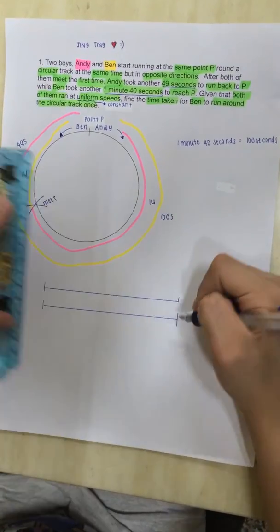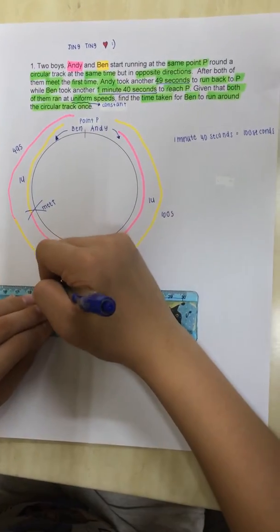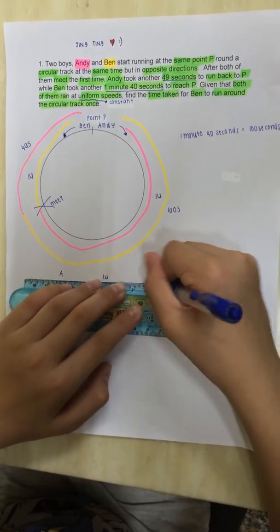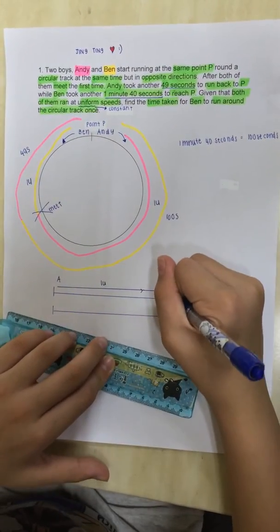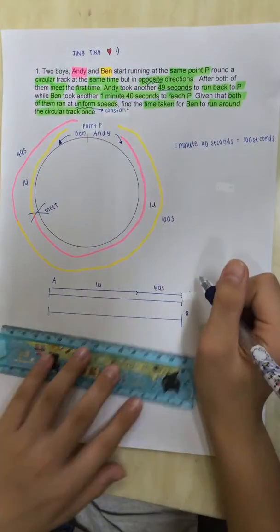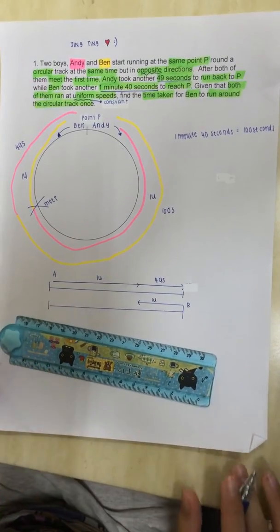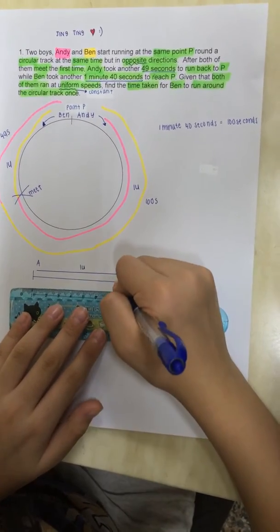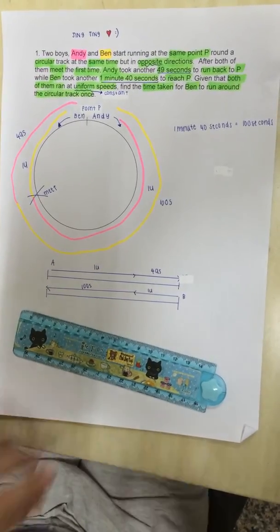So, the first one I will be doing is Andy. So, Andy ran 1 unit before meeting, 1 unit of time before meeting. After that, ran 49 seconds back to where he started. While, for Ben, he started running here because it's the opposite direction. And, he ran to the meeting point here, which he also took 1 unit of time. Then, he ran another 100 seconds back to where he started. And, this is how it looks like. So, this is the meeting point.